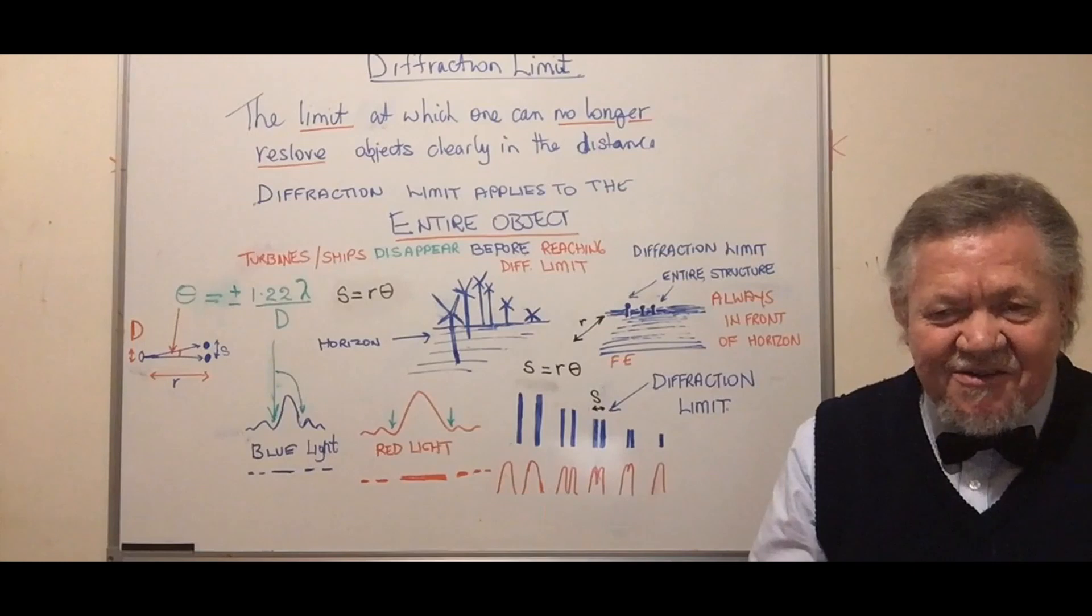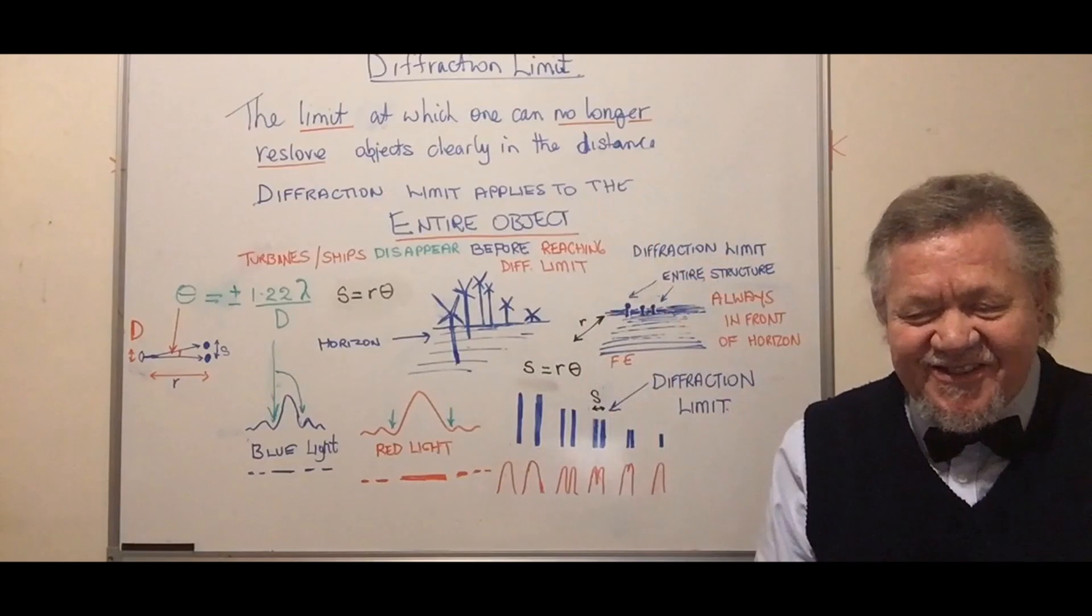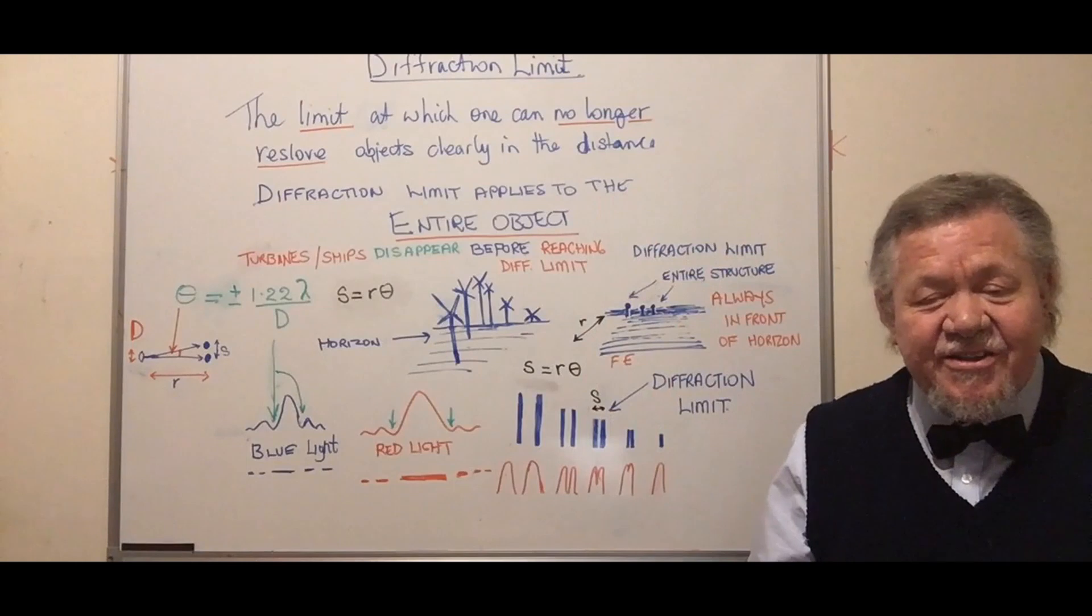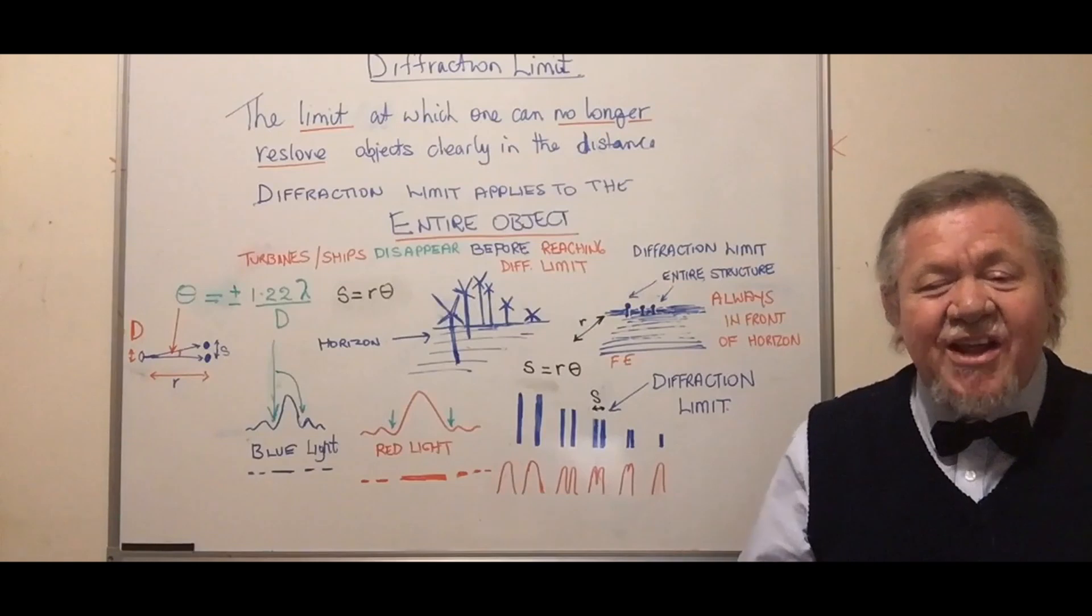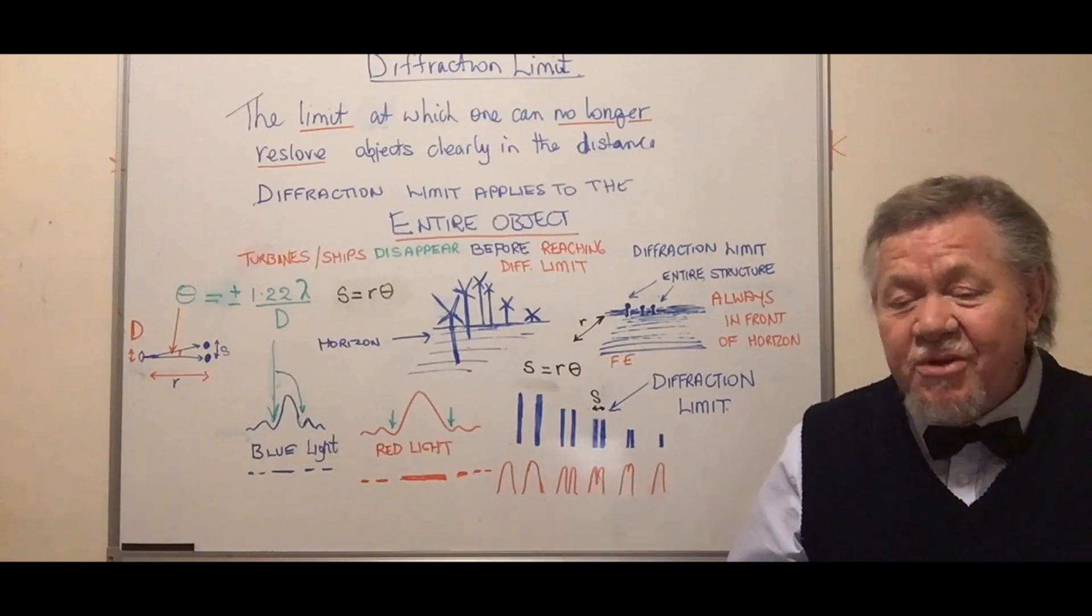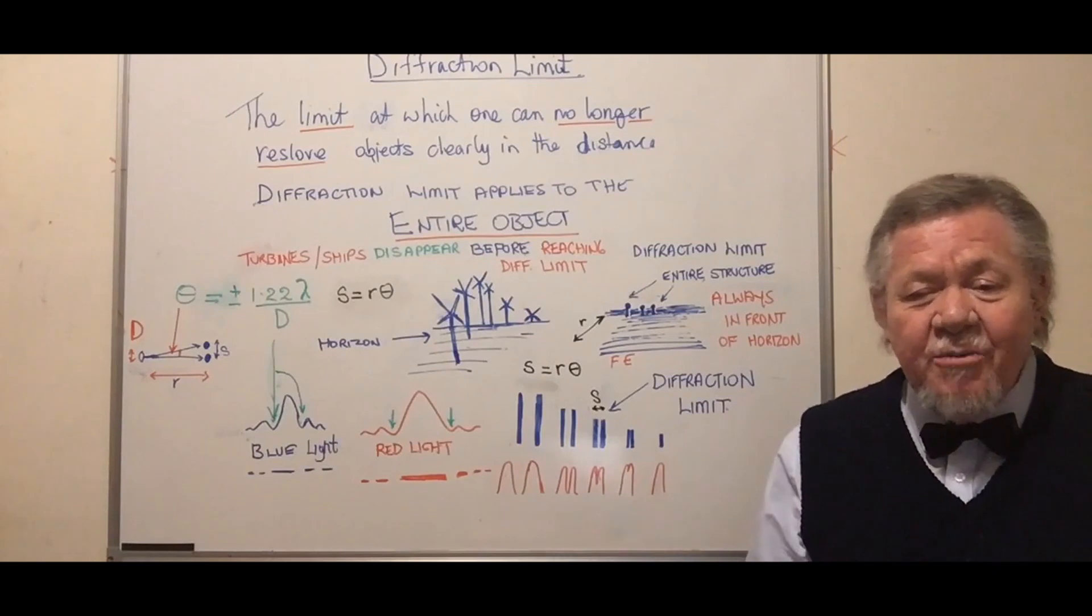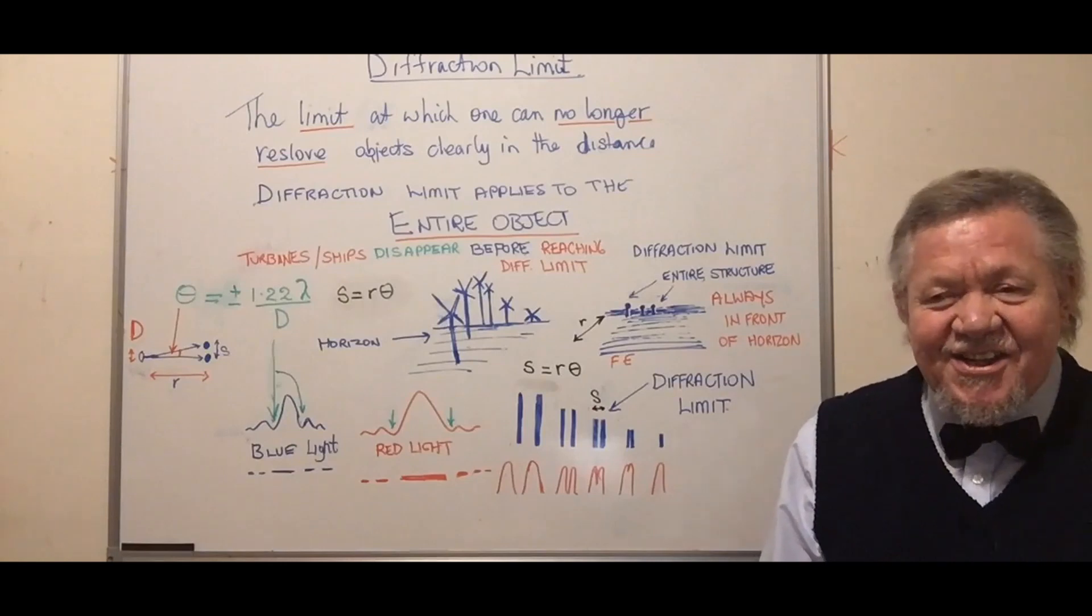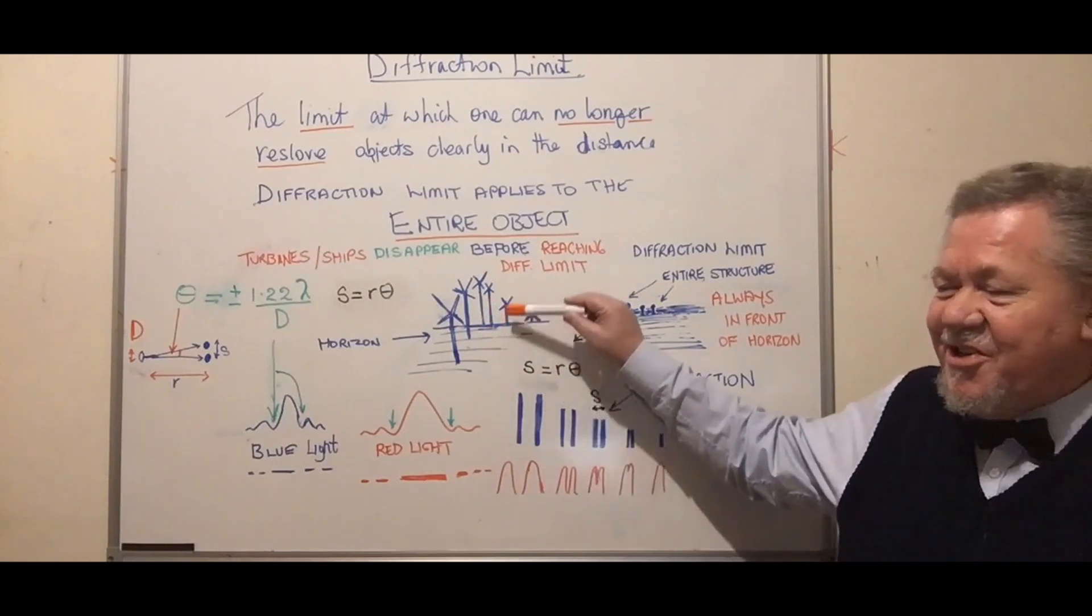This video covers the topic of diffraction limit. Nathan Oakley and Sleeping Warrior have been pushing this lately because their Black Swan nonsense is thoroughly debunked. They're claiming that when you observe ships or wind turbines over the horizon, what you're observing is a diffraction limit.